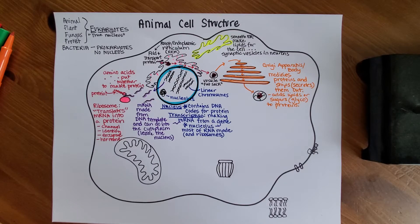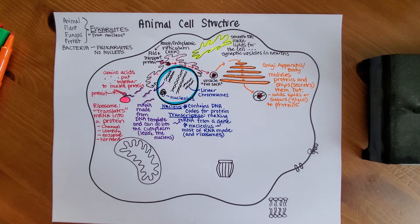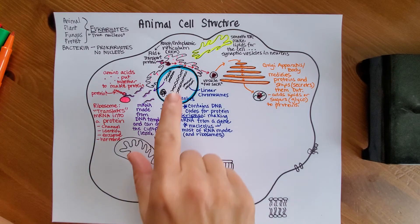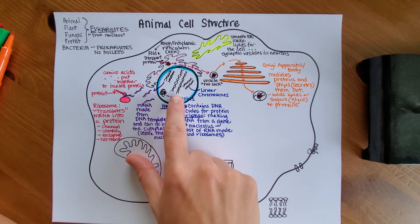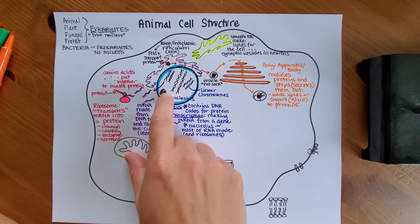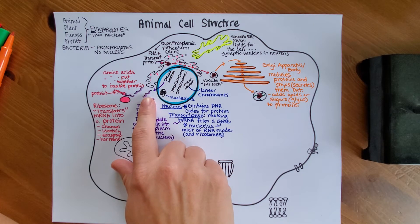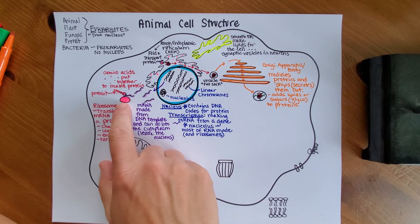Welcome back to this video on animal cell structure. This is part two. So far I talked about the nucleus, which contains DNA. DNA is transcribed into mRNA.